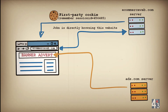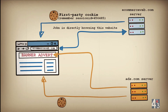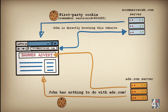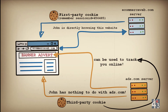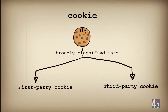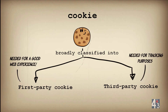When John visits ecommerceweb.com, the ads.com server serving the banner ad could set a cookie for John. This is a cookie set by another website John is not directly browsing — he is on ecommerceweb.com — making it a third-party cookie. While there are many ways companies track you online, third-party cookies are an important tool for this. First-party cookies are needed for the web to function well, whereas user tracking for targeted ad-serving purposes is achieved with third-party cookies.